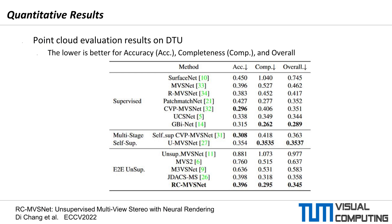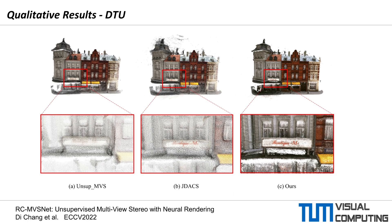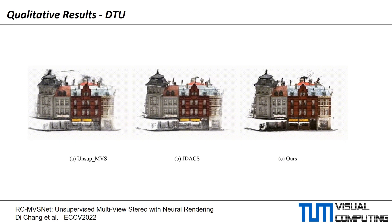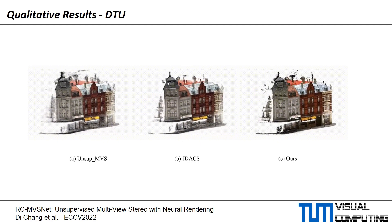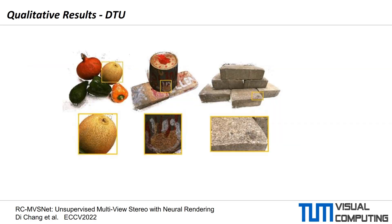We train our proposed RCMVSnet on the DTU training set and evaluate generated point clouds on the test set. We achieve state-of-the-art results in accuracy, completeness, and overall score among all unsupervised methods, and are even competitive to supervised ones. Here we show one of the objects generated by our method in comparison with previous works. Our approach generates more complete and realistic detail, and we obtain similar improvements on other objects.